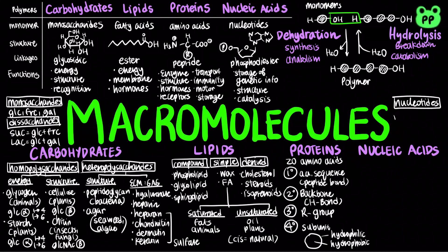There are two main types of nucleotide bases. Purines include guanine and adenine. Pyrimidines include cytosine, uracil, and thymine. Guanine base-pairs with cytosine, and adenine base-pairs with uracil or thymine.